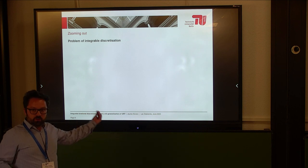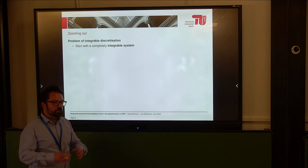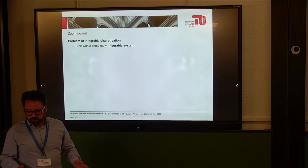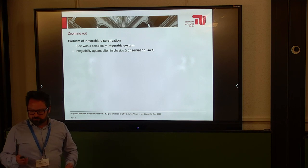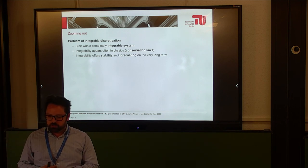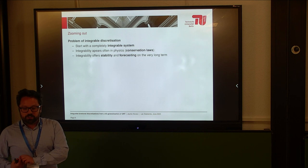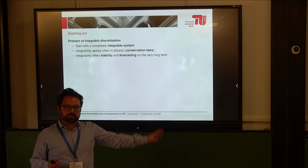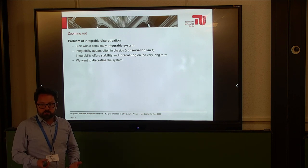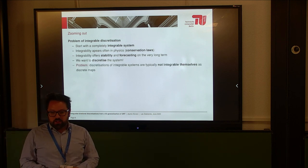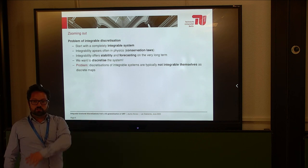To zoom out: we saw an example; now I want to explain the general setting. We start with a completely integrable system. I don't have to convince you why integrable systems are very important, but they appear often in physics in the form of conservation laws, and from the applied perspective they offer stability and long-term forecasting. We would like to see how we can make a discrete version of these systems. The problem is that systems that are integrable in continuous time are normally not integrable in the discrete version.